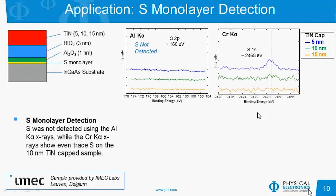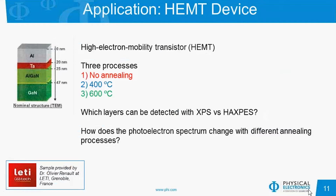In my final example, I have a high electron mobility transistor provided by LEDI. It consists of a 20 nanometer layer of aluminum, followed by a 5 nanometer layer of tantalum, then 22 nanometers of aluminum gallium nitride, and then a gallium nitride substrate. The structure was verified by TEM, and I have three of the same sample with different processes: no annealing, annealing at 400°C, and annealing at 600°C. I'm going to answer two basic questions: which layers can I detect with XPS versus HAXPES, and how does the photoelectron spectrum change with the different annealing processes?